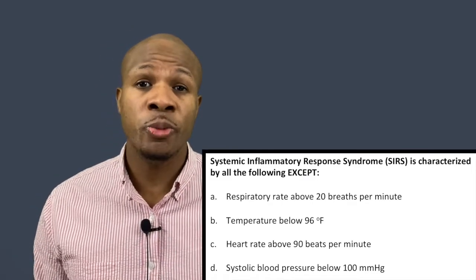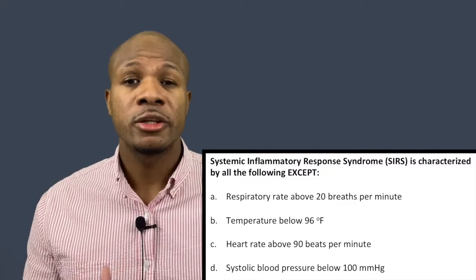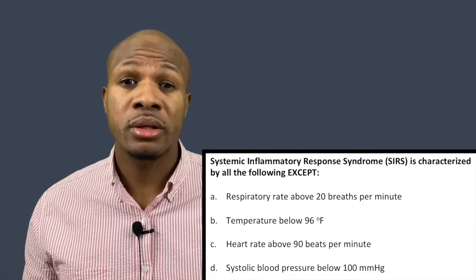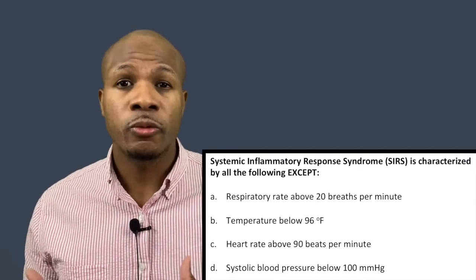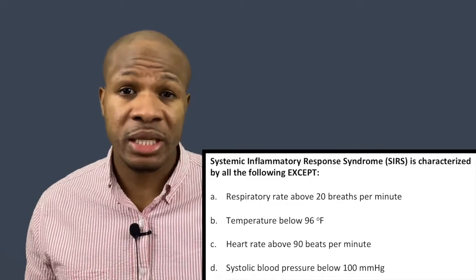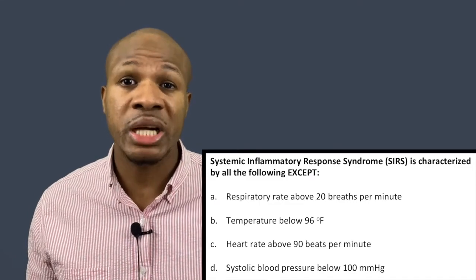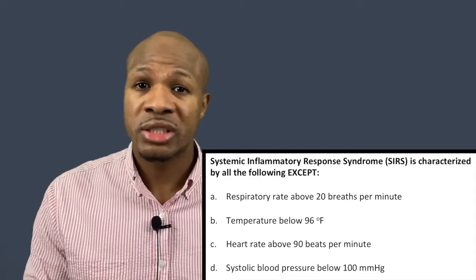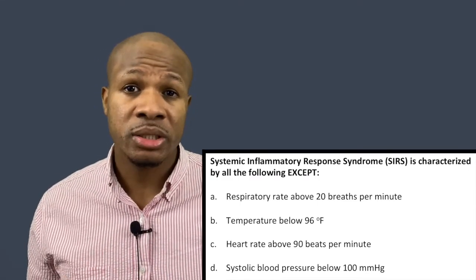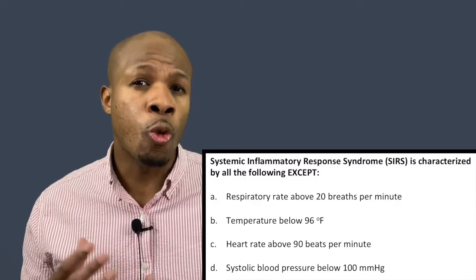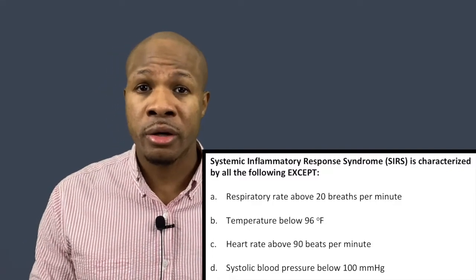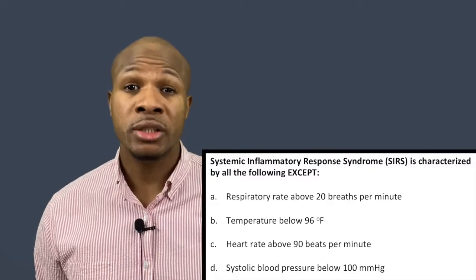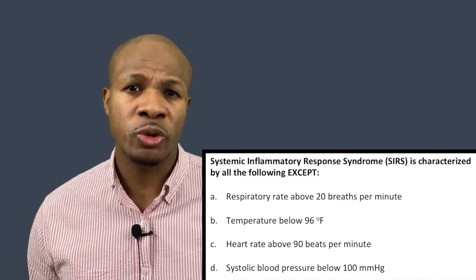Sepsis is a little more severe — you're starting to have organ failure, the body is shutting down, blood pressure starts to drop. Those are definite signs of sepsis or shock. But SIRS is a syndrome that occurs before the body goes into septic shock, so the characteristics of SIRS are going to be warnings that something severe could occur if this infection or illness is not brought under control.